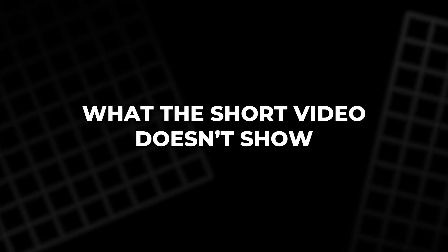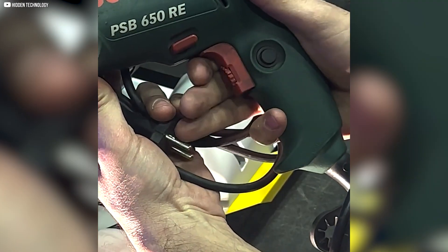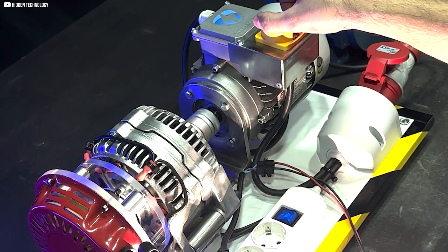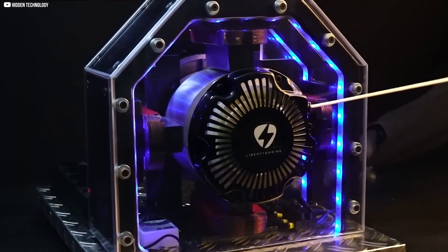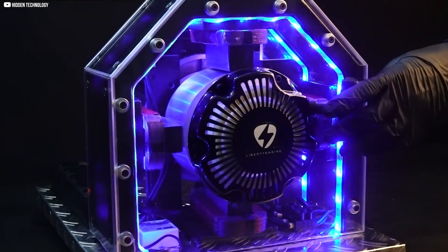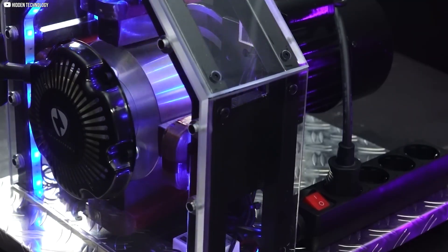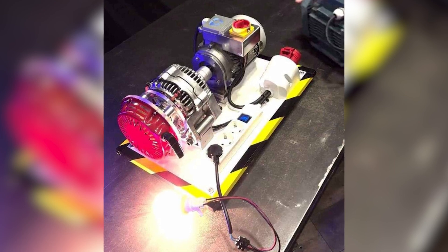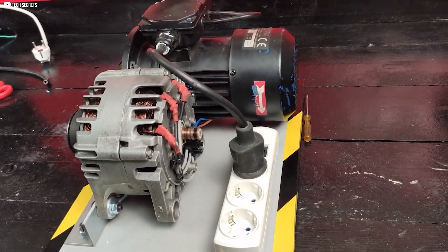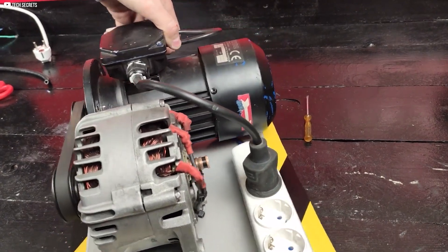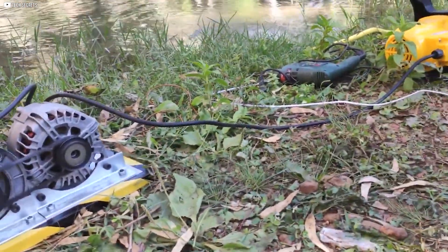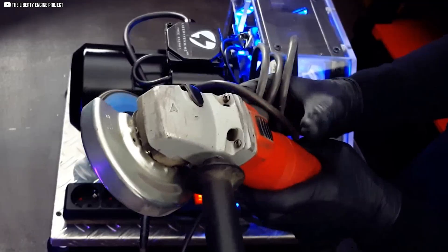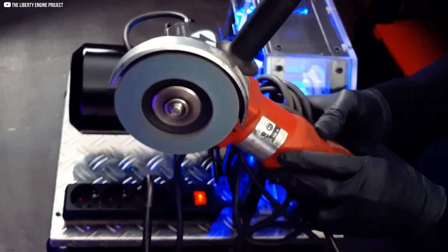What the short video doesn't show. While the edited video gives us a glimpse into the Liberty engine's potential, it also leaves a lot unsaid. Much of the technical detail, like torque input, efficiency ratios, and internal circuitry, is locked behind a members-only version. In the short clip, we see the engine running. We see voltage readings. But we don't see a full breakdown. There's no continuous runtime footage. No load testing. And no measurement of current flow under working conditions.